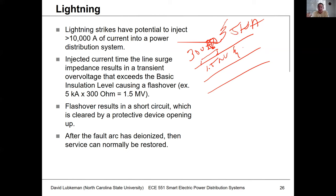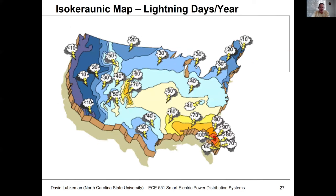In the case of lightning, if there's an upstream breaker and we can de-energize the line, a lot of times the line will clear and we can actually close back in again — this might be a temporary fault. Lightning is something overhead lines are susceptible to. We can estimate how many lightning events we'll have per year from an isokeraunic map. Depending where you are in the United States, you'll have different levels of lightning — on the West Coast, less than 10 thunderstorm days per year, whereas in Central Florida, you might have around 100 thunderstorm days per year. The incidence of lightning strikes is a function of location.